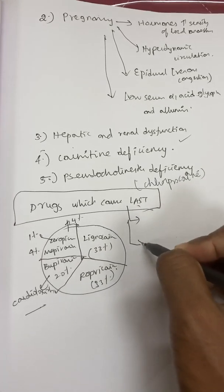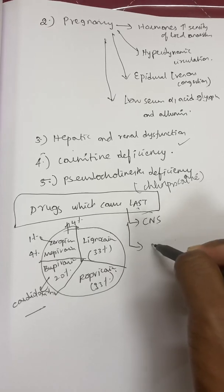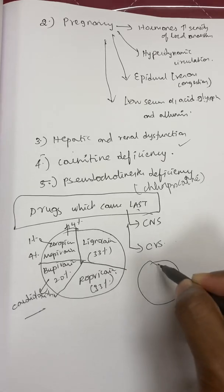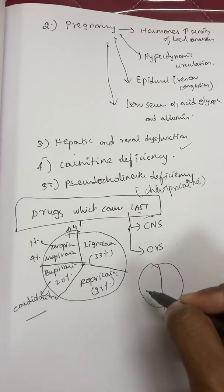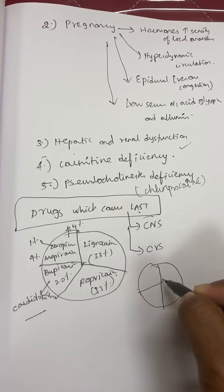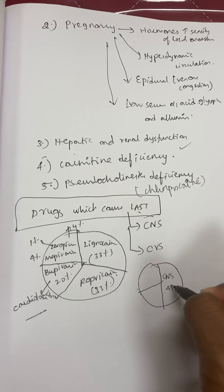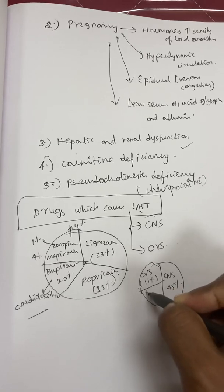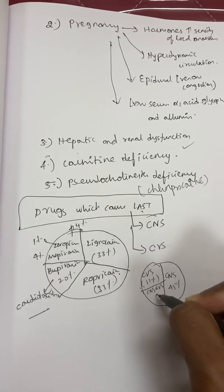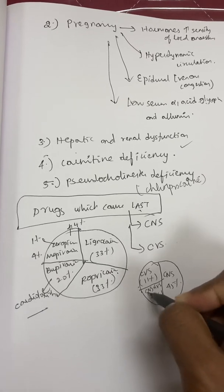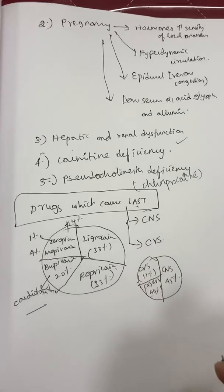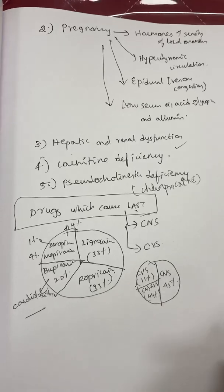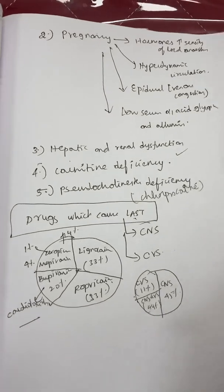LAST majorly involves two systems: CNS and CVS. Distribution of presentations: CNS involvement alone accounts for 45% of cases, CVS alone accounts for 11%, and combined CNS plus CVS involvement accounts for 44%. We will now look at the individual clinical manifestations in each system.